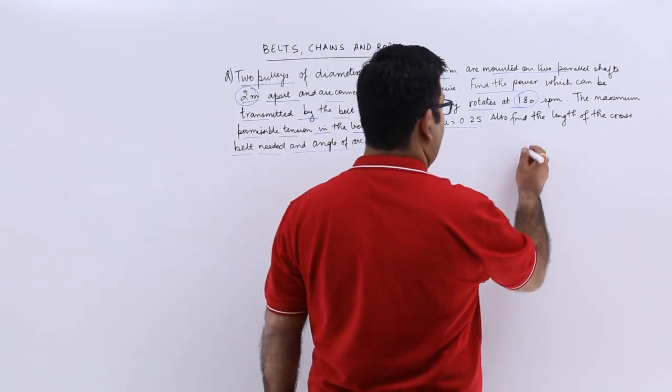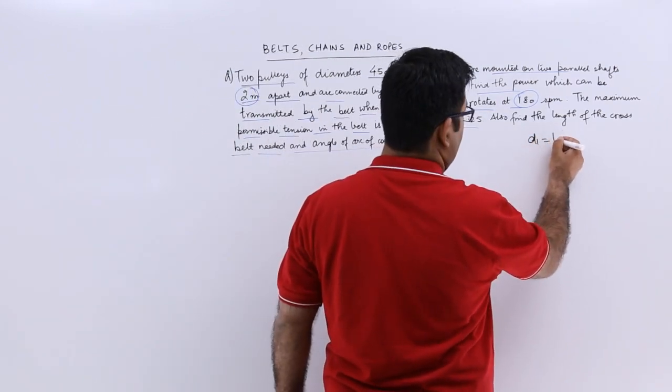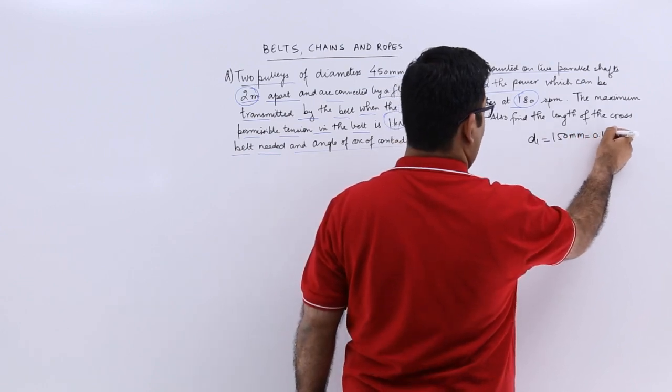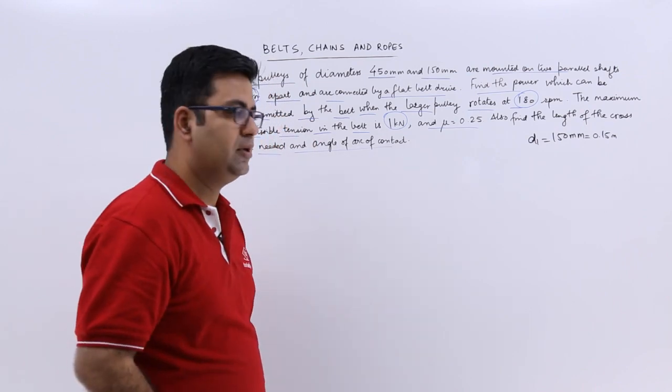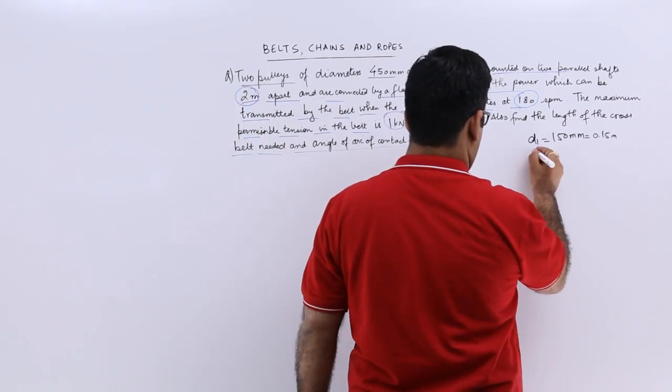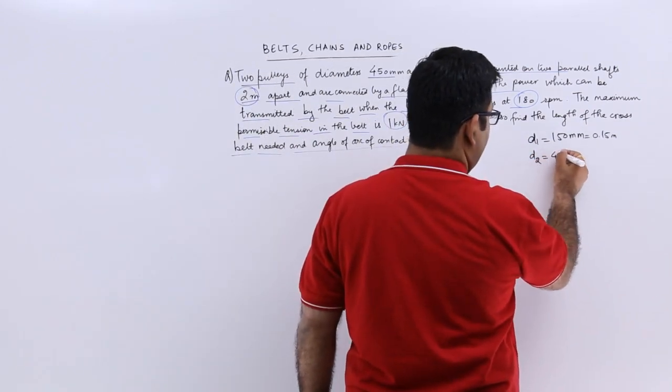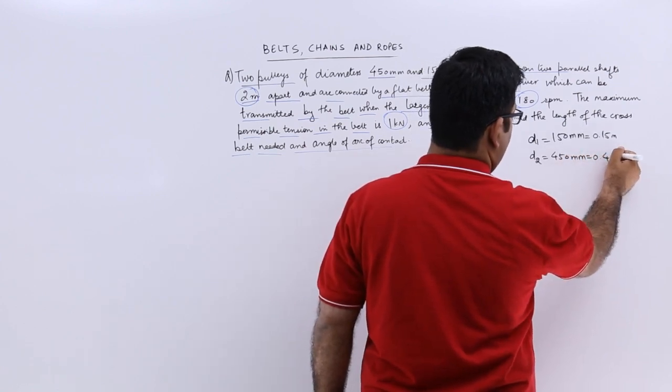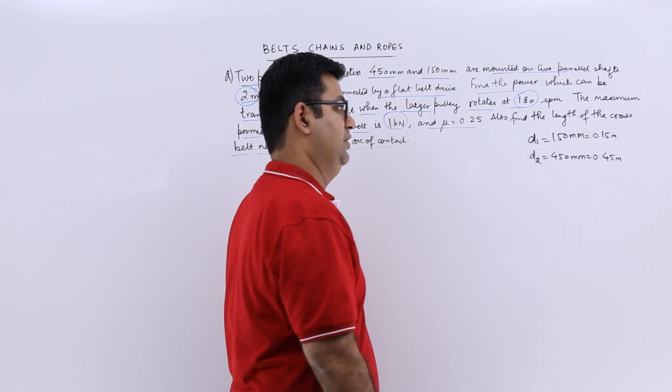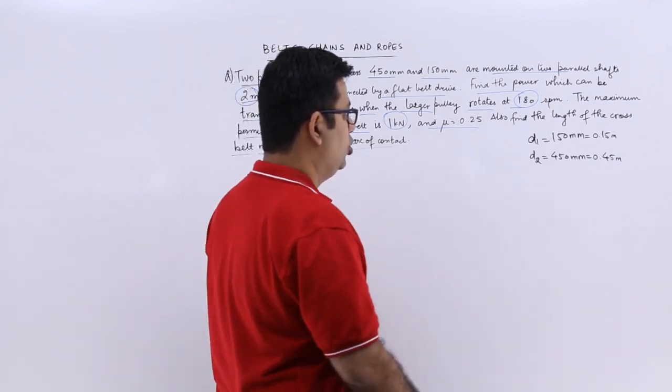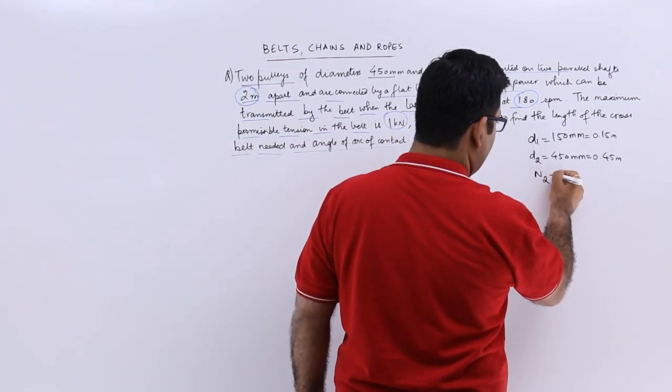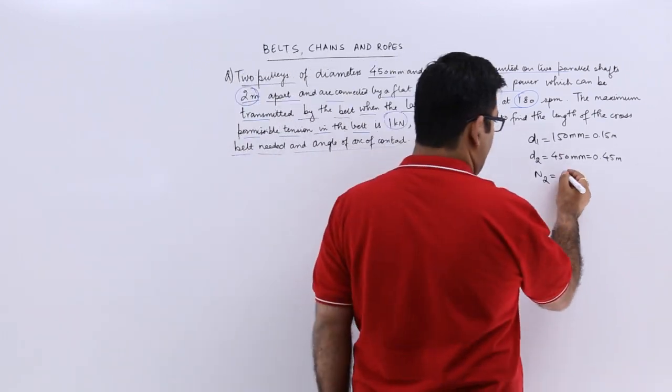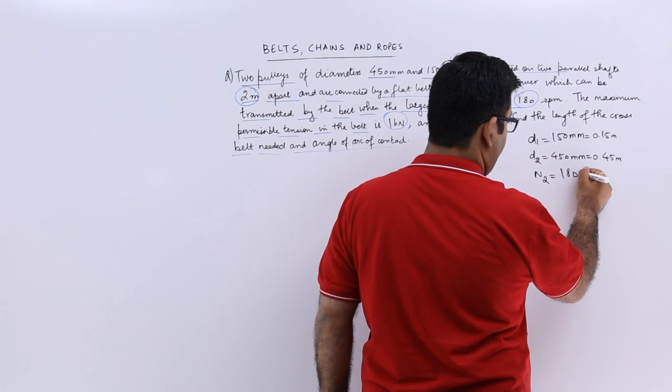So let us say D1 is 150 mm which is 0.15 meters. D2 is 450 mm which is 0.45 meters. So the larger one is making 180 rpm. So N2 becomes 180.